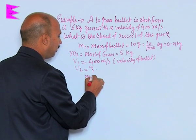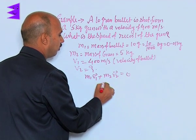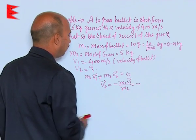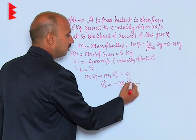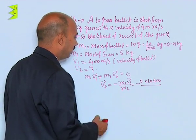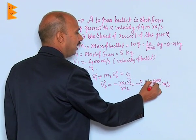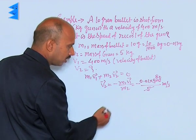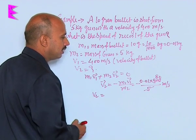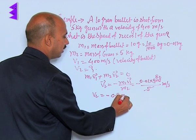According to conservation of linear momentum, M1V1 + M2V2 = 0, since the system is initially at rest. Therefore V2 = −M1V1 / M2 = −(0.01 × 400) / 5 = −0.8 meters per second. This is the recoil velocity of the gun.